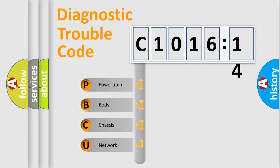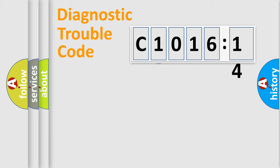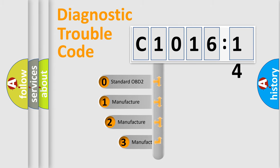We divide the electric system of automobile into four basic units: Powertrain, Body, Chassis, and Network. This distribution is defined in the first character code.